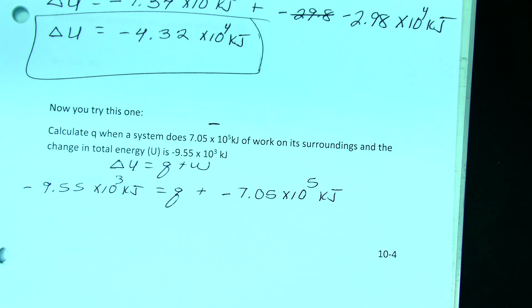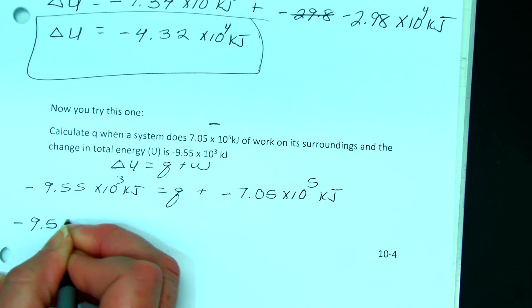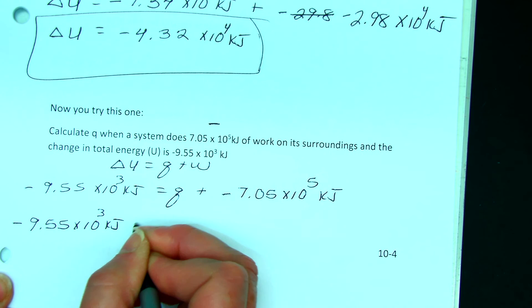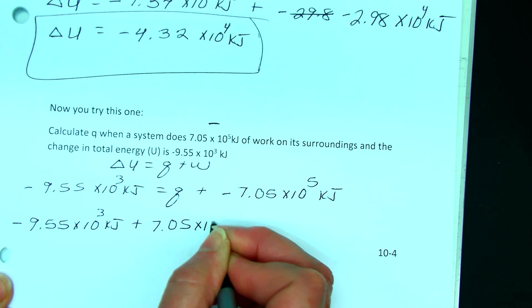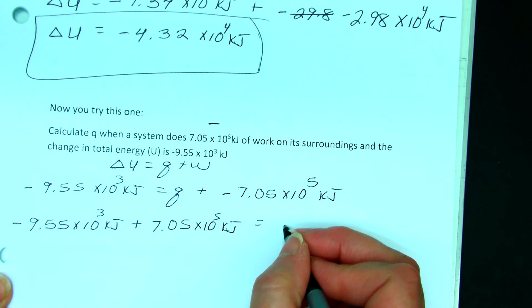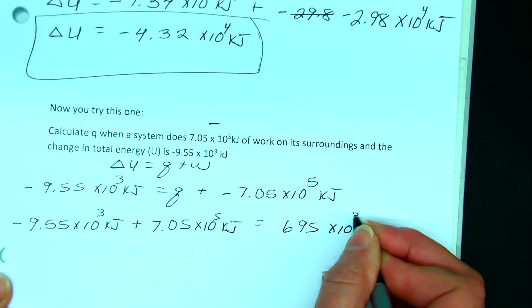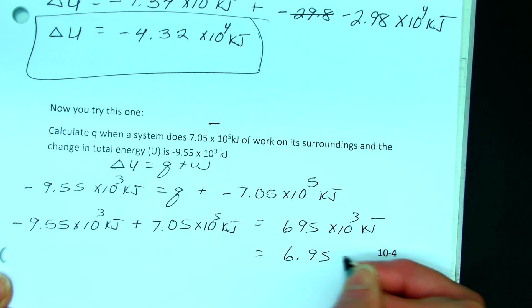So now, rearranging this to solve for Q, we get negative 9.55 times 10 to the 3rd kilojoules, plus 7.05 times 10 to the 5th kilojoules, is equal to 695 times 10 to the 3rd kilojoules, which is equal to 6.95 times 10 to the 5th kilojoules.